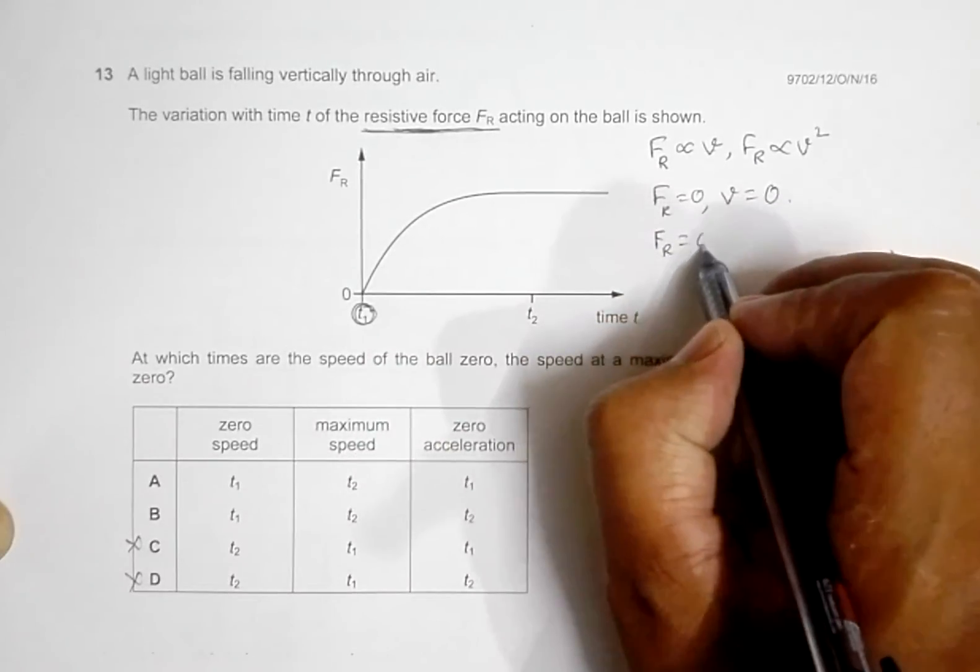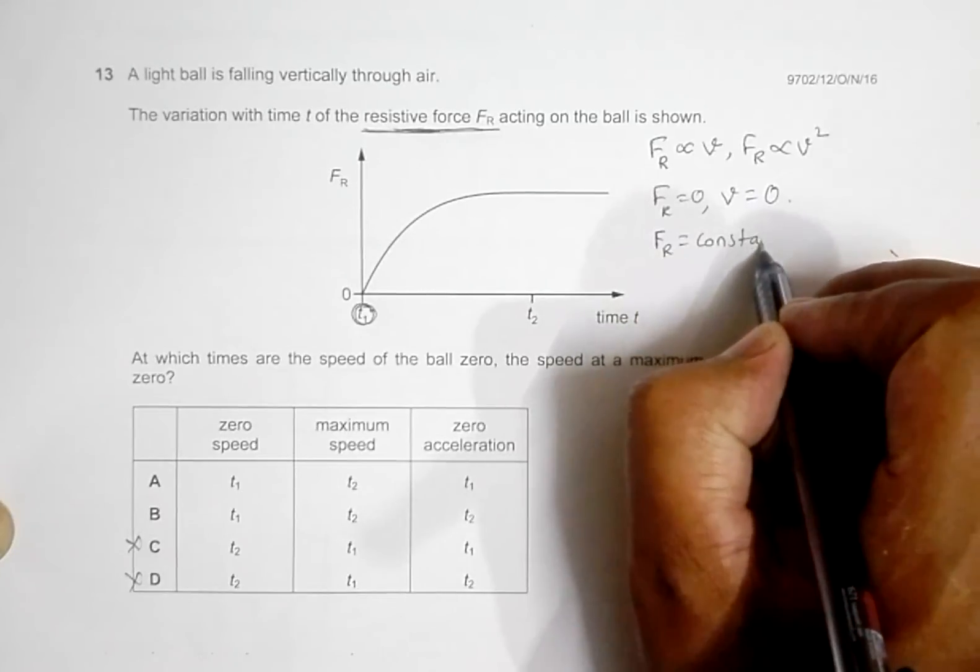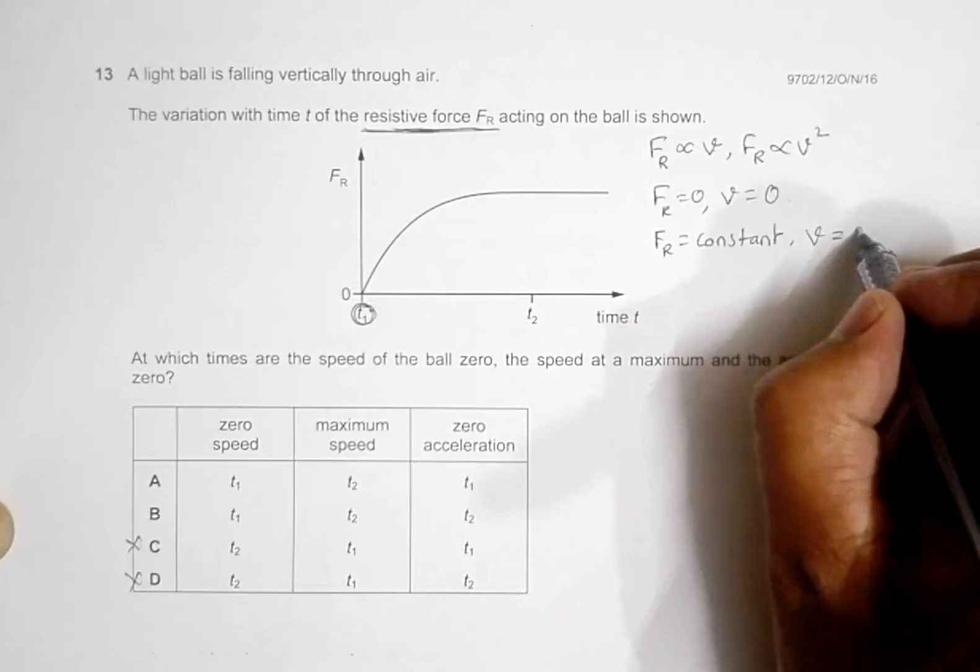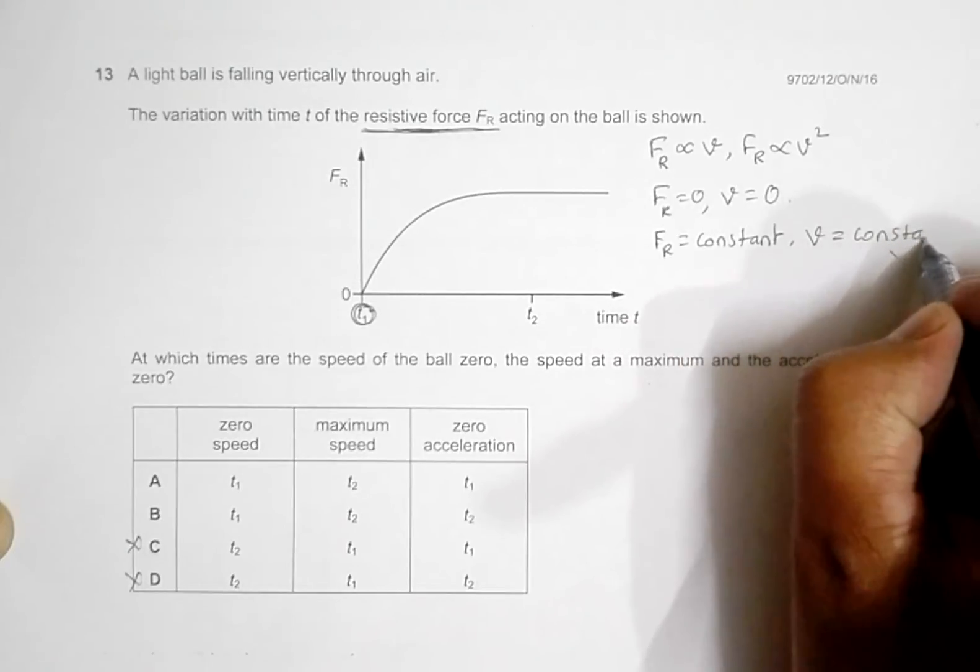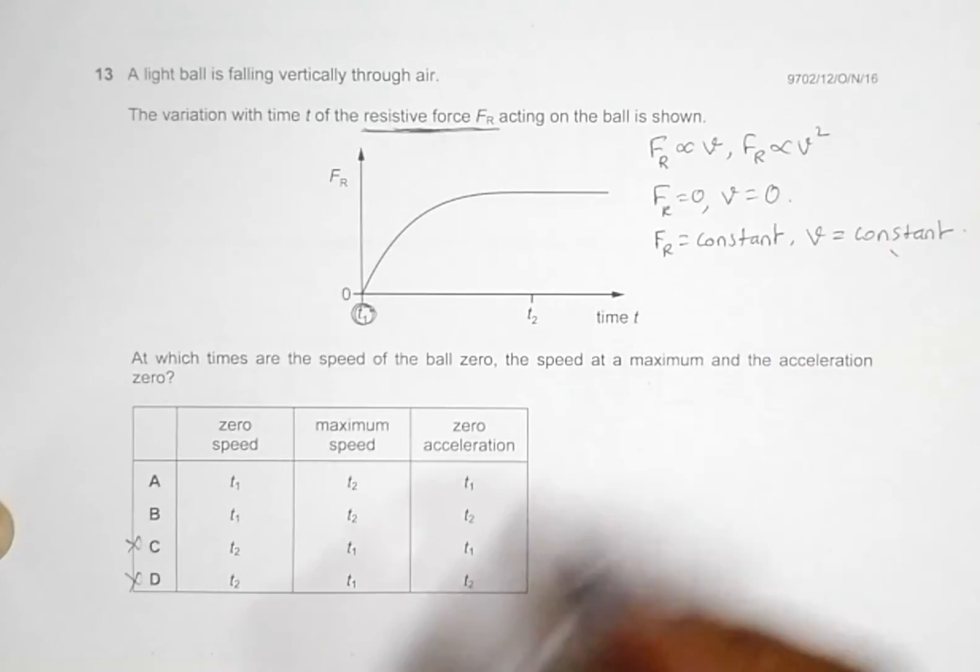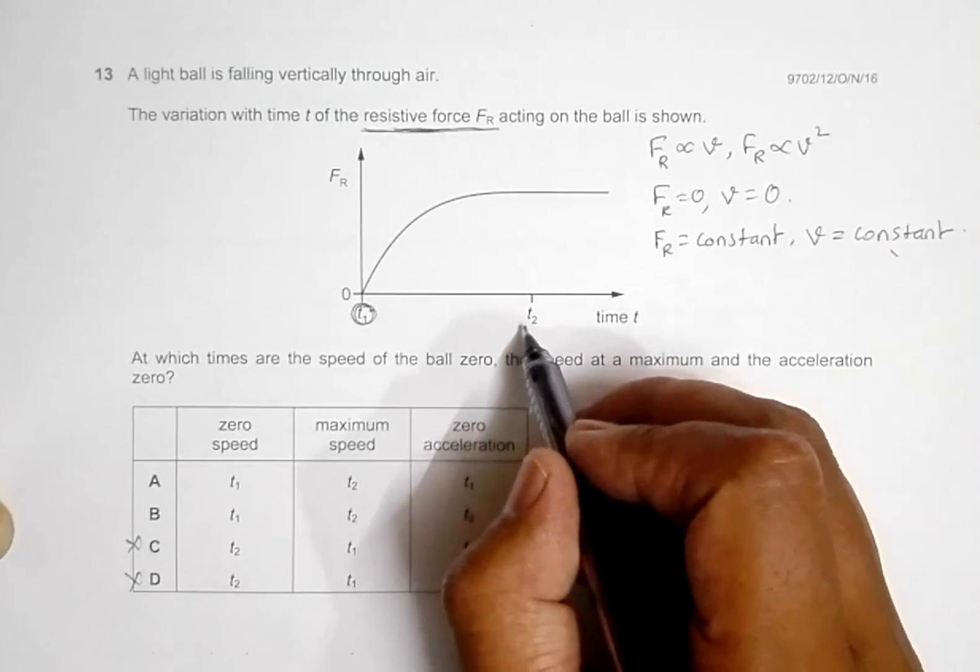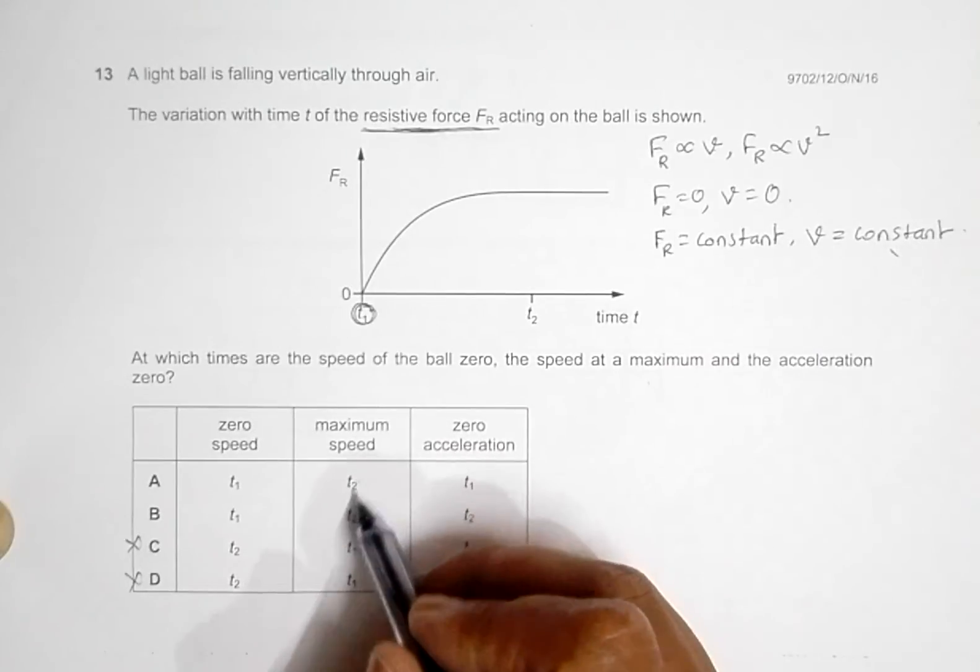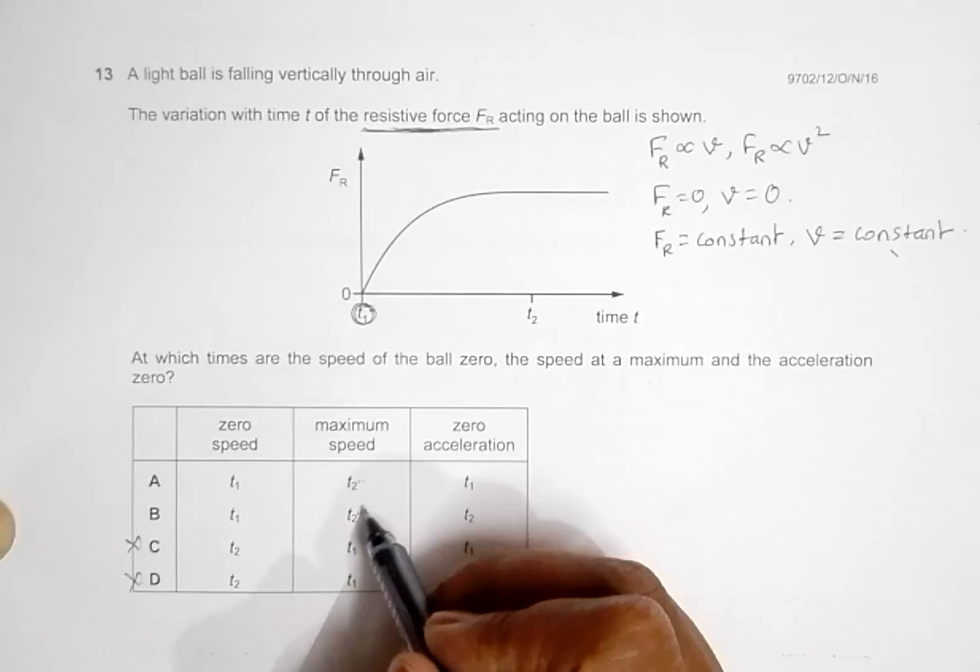FR is already constant, that means at that time V also should be constant. Since FR is constant, V also should be constant. So let us go for that. So at t2, this V is constant. So in both the cases, t2 has got V constant, so we still cannot distinguish which is the correct choice.